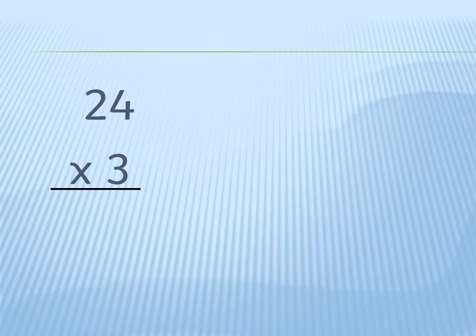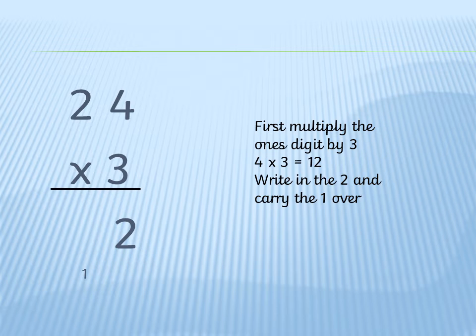Let's work out 24 times 3. First you times the ones number of the two-digit number by 3. So 4 times 3 equals 12. We write the 2 underneath the ones column and we carry the 1 over to the tens column.